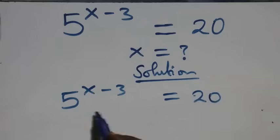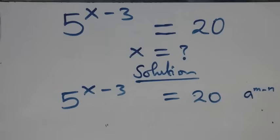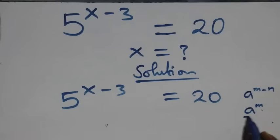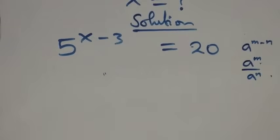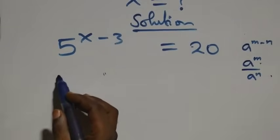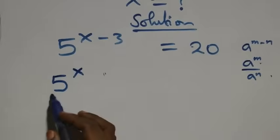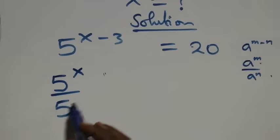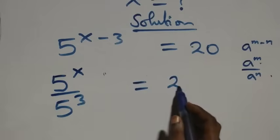What we have here follows: when we have a raised to power n minus n, which can be written as a raised to power n over a raised to power n. So what we have becomes five raised to power x over five raised to power three, equals to twenty.